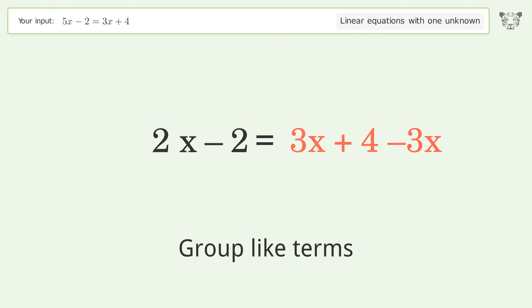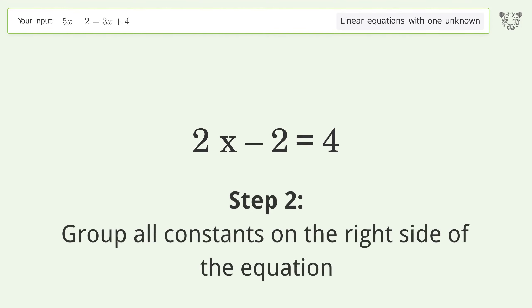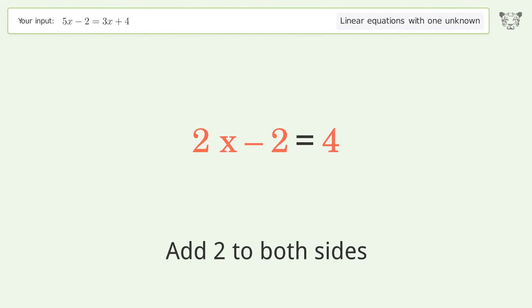Group like terms. Simplify the arithmetic. Group all constants on the right side of the equation. Add 2 to both sides. Simplify the arithmetic.